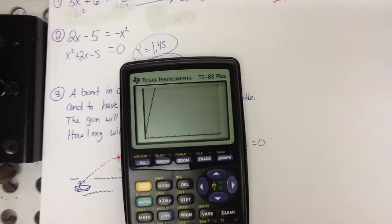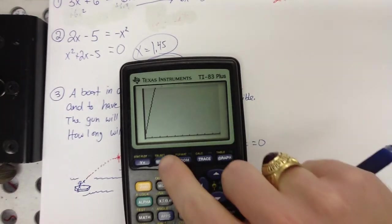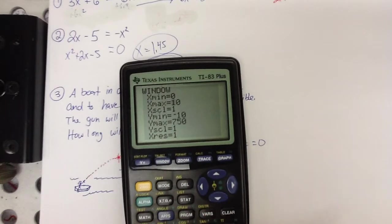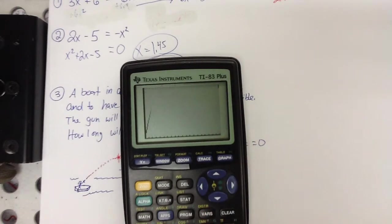It went higher than 750 feet and never came back down. So what that means is we need to go higher and we need to go over further in time. So let's try maybe 20 seconds and let's try maybe more than 1,000. Let's try 1,500 feet. It ought to fit on there now.